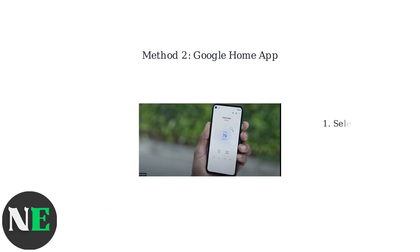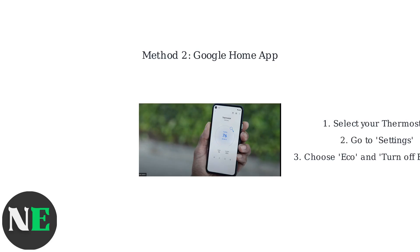Alternatively, use the Google Home app. Select your thermostat, go to Settings, then Eco, and choose Turn Off Eco Mode.